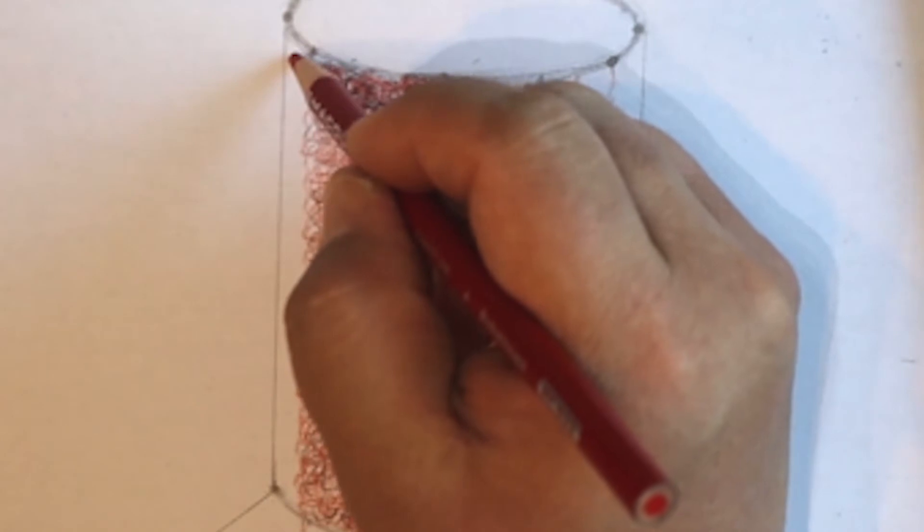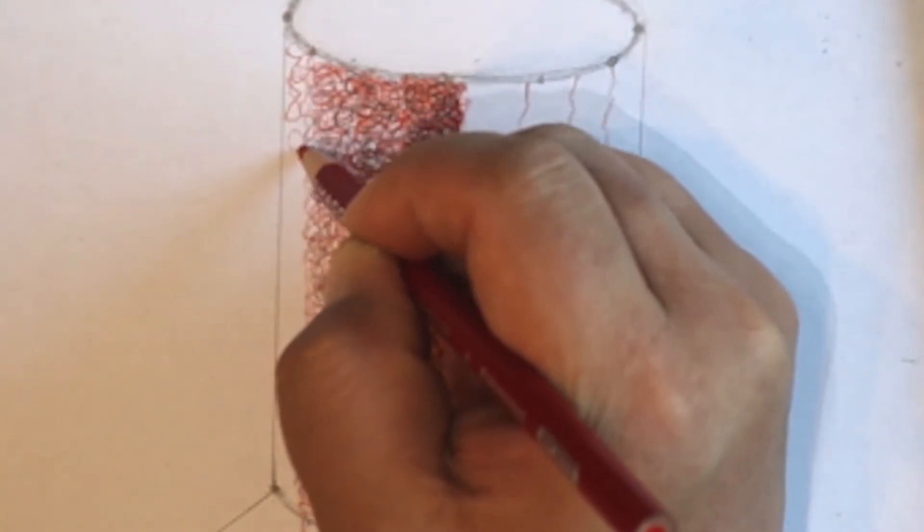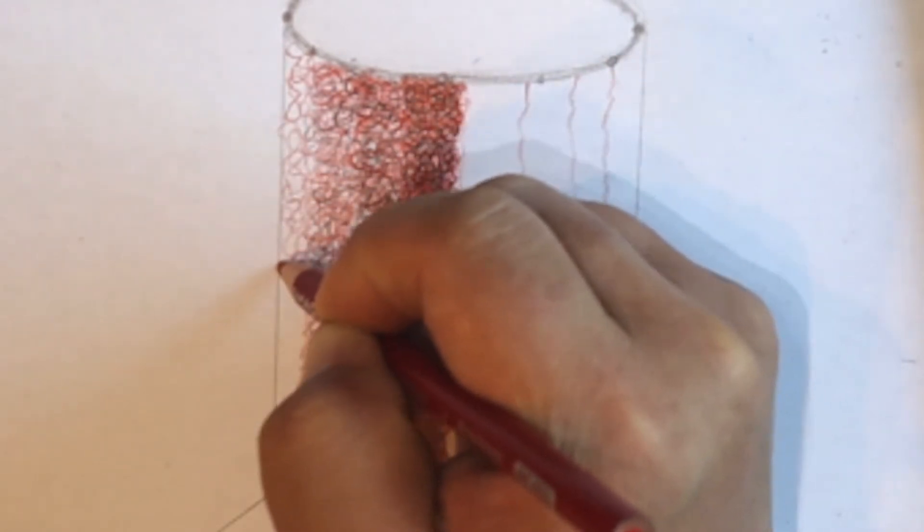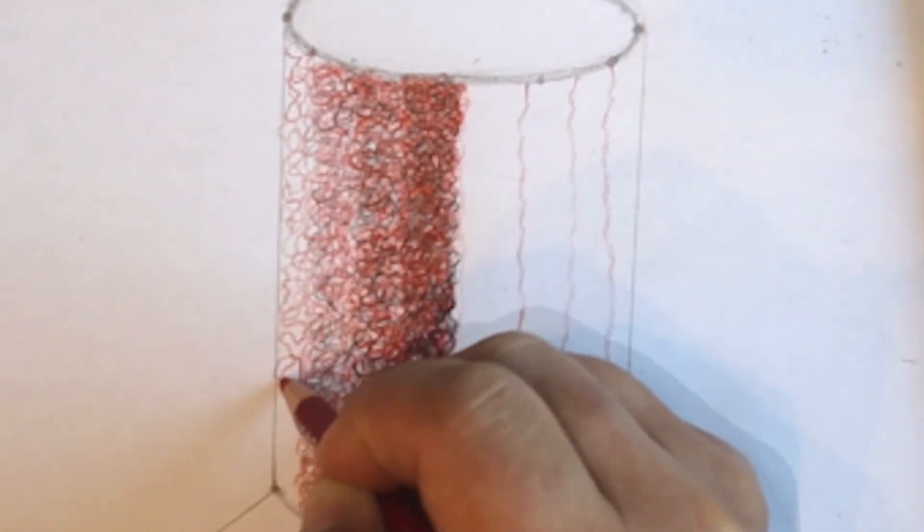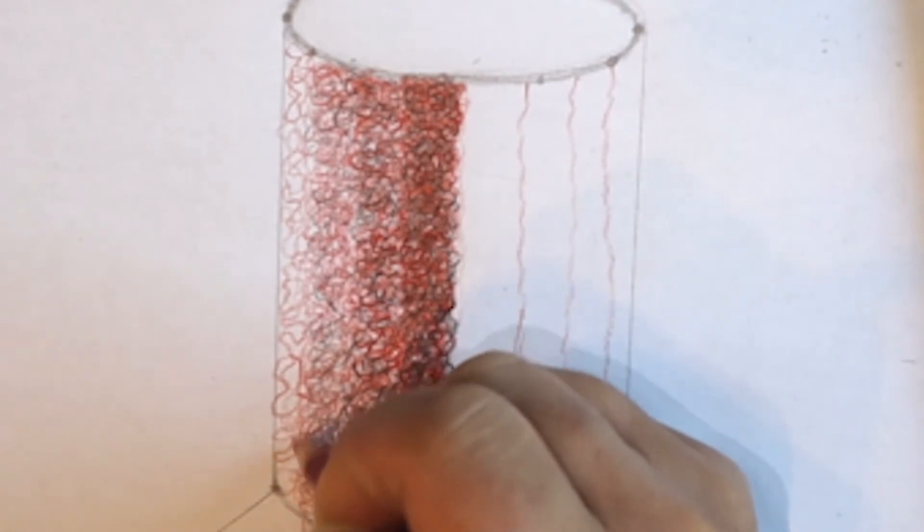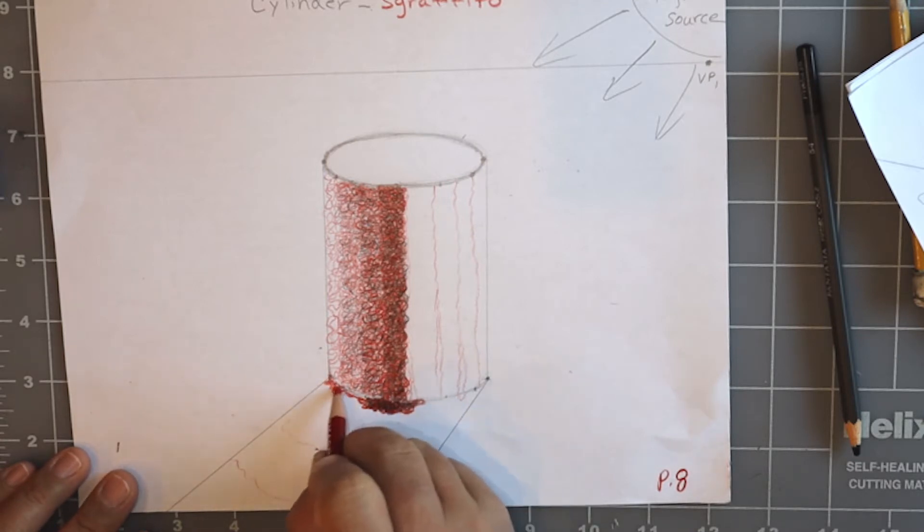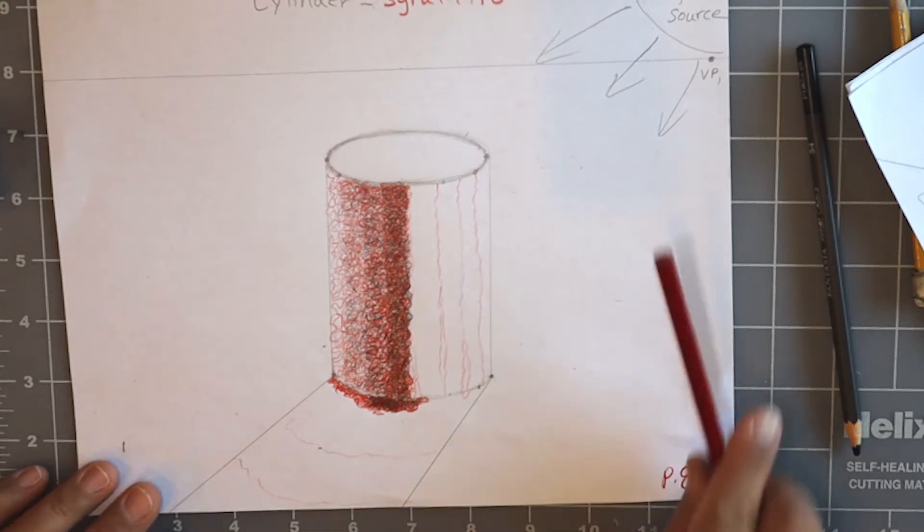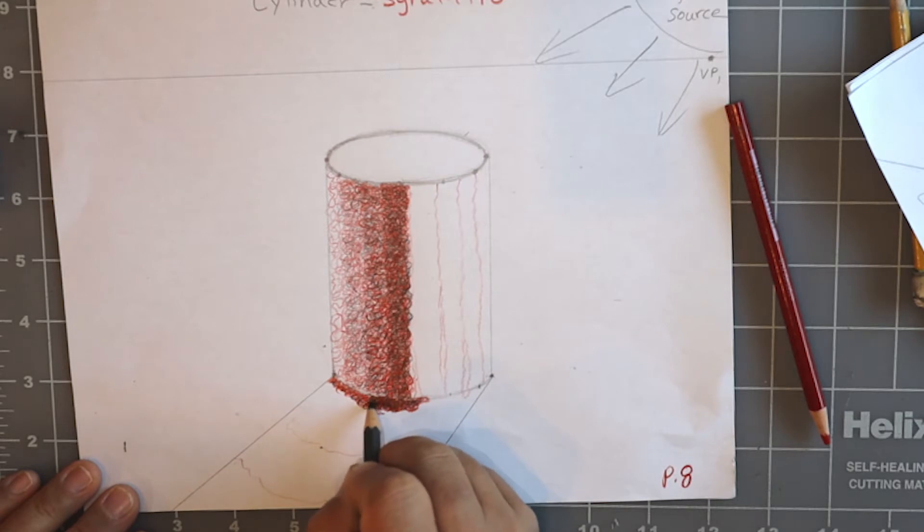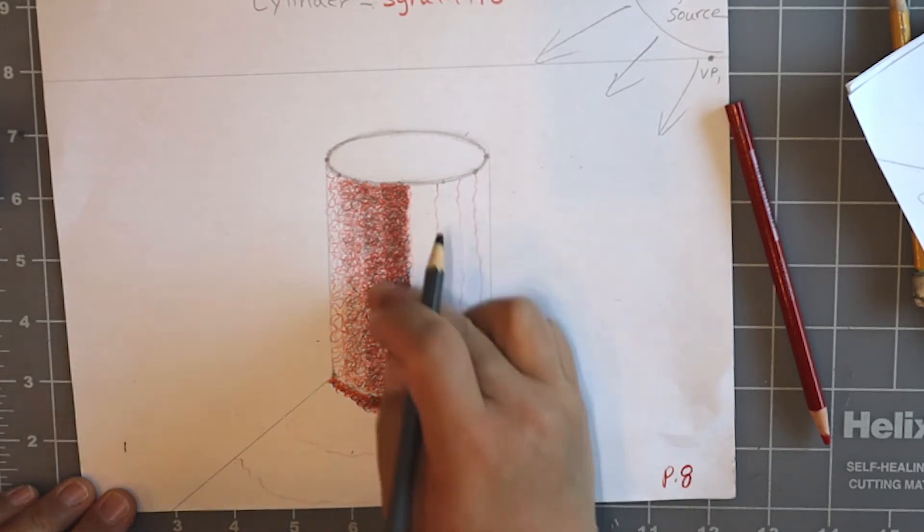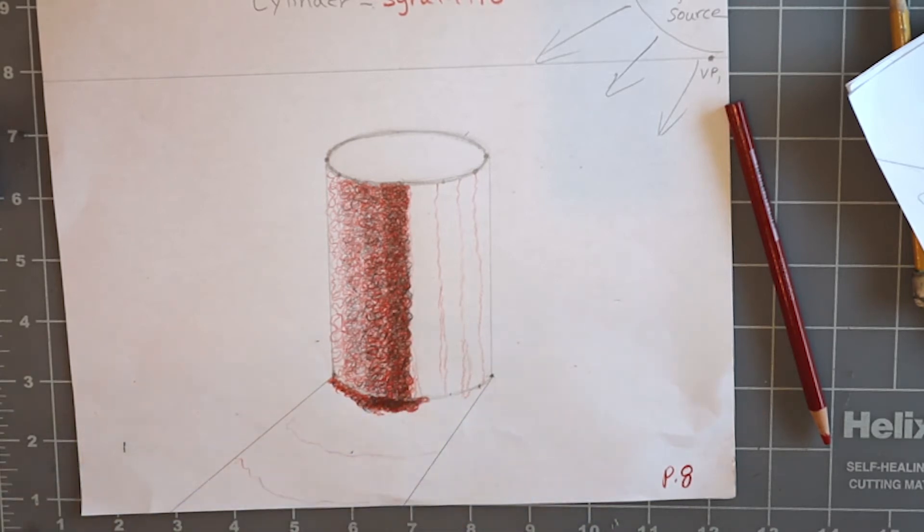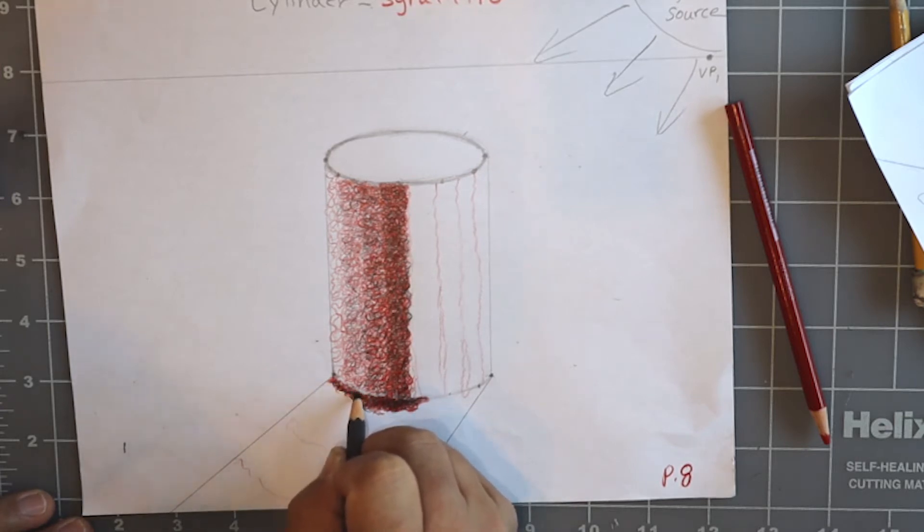Now what I'm going to do is I'm going to do the reflected light area here. So I'm going to keep the squiggles kind of big. You can see I'm doing big squiggles and I am also opening up my squiggles so they look kind of big. And that's it. That's my reflected light area.